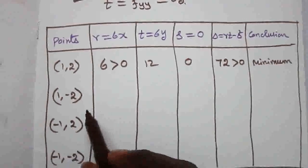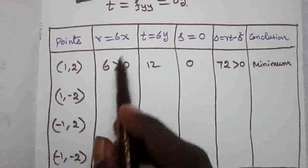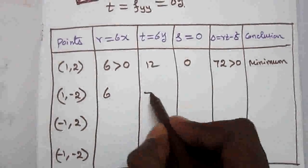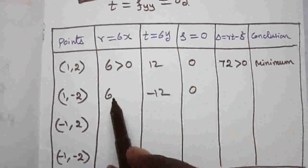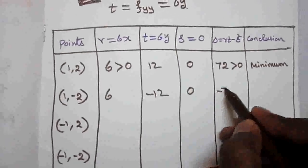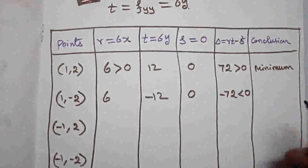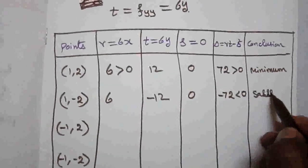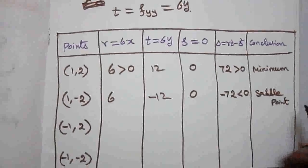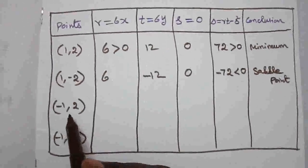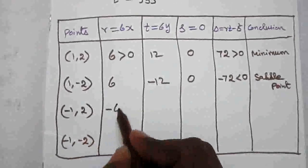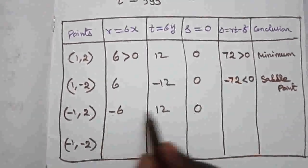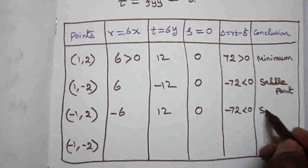For point (1, −2): r = 6, t = 6(−2) = −12, s = 0. Delta = 6 × (−12) = −72, which is less than zero — saddle point. For point (−1, 2): r = −6, t = 12, s = 0. Delta = −72, less than zero — saddle point.